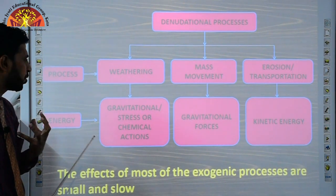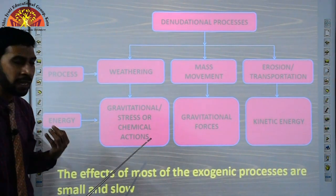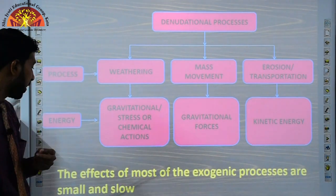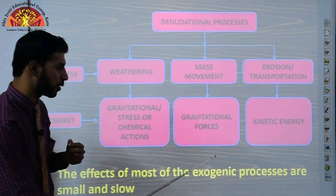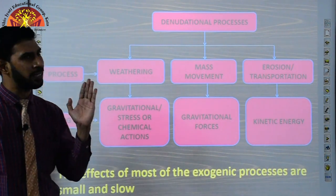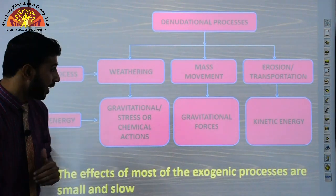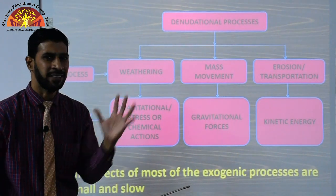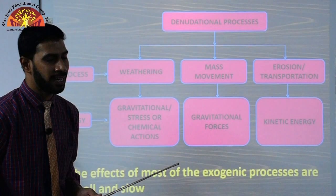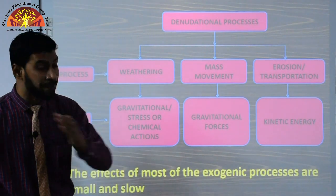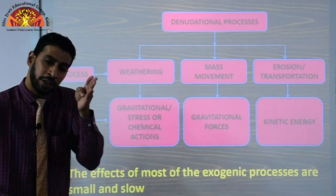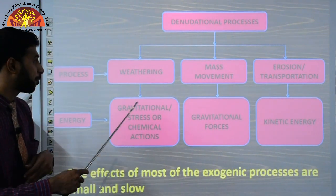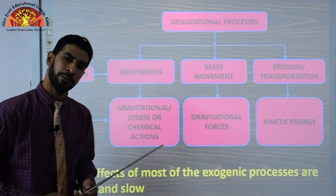The denudational process involves gravitational stress, chemical action, gravitational forces, and kinetic energy. The effects of most exogenic processes are small and slow — they do not happen fast. Some things cause effects very slowly and gradually. This denudational process is one of those slow processes.